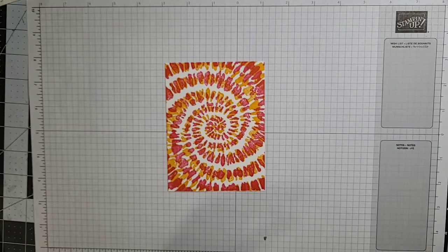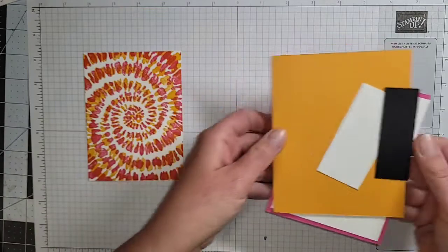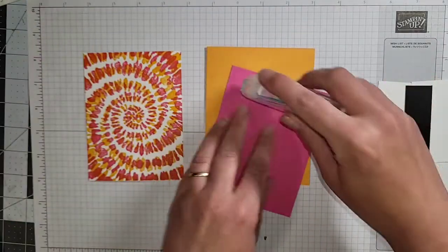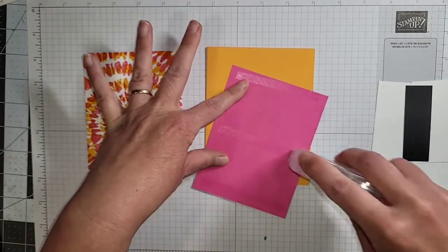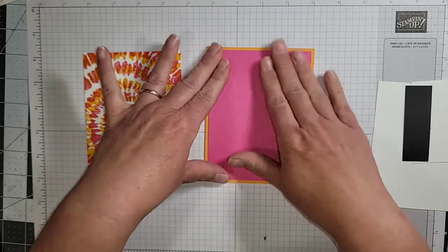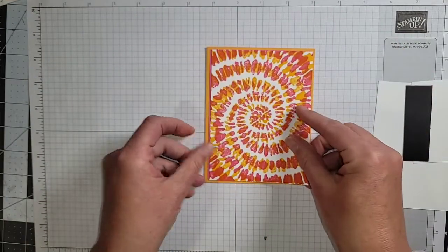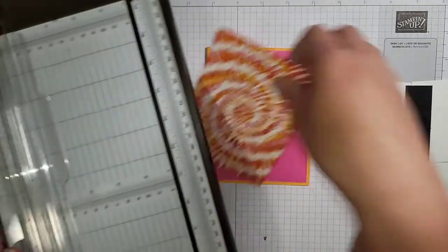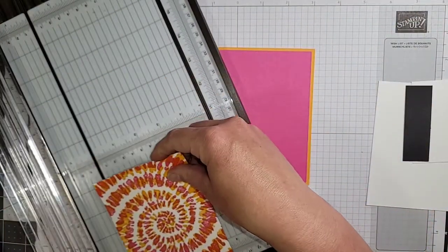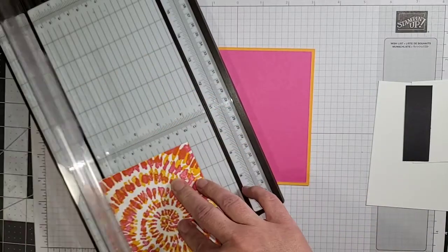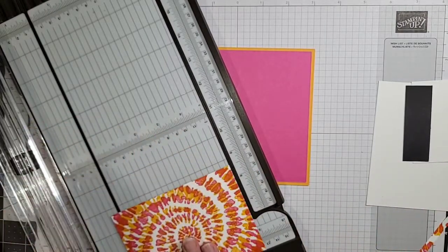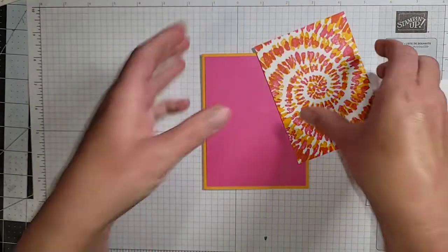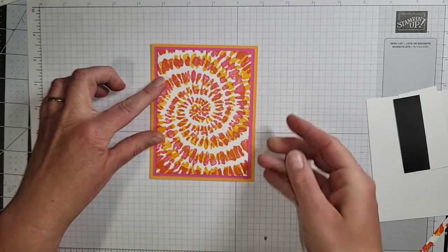So I'm starting with a Mango Melody card base. I have a Polished Pink mat here so I'm going to go ahead and attach that and just centering that on the front of the card. Okay and now we can go ahead and put our beautiful...oh I didn't cut that quite the right size so let me just trim that down. I must have used the wrong...that's okay no worries. So I want this to be three and three quarters by five. Okay and then that's going to go right over top of the Polished Pink like that.